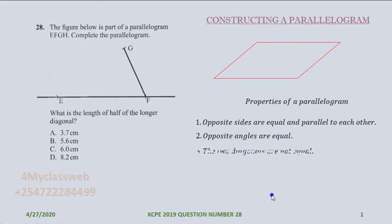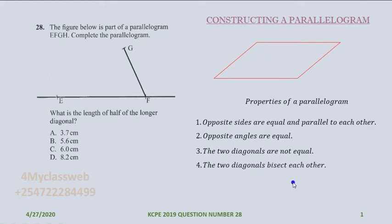A parallelogram has two diagonals and they are not equal. If you look at the diagonal joining one corner to the other and compare it with the other diagonal, you realize those two diagonals are not equal — one is longer, the other is shorter. The two diagonals bisect each other; they bisect somewhere at the center. To bisect means to cut halfway.